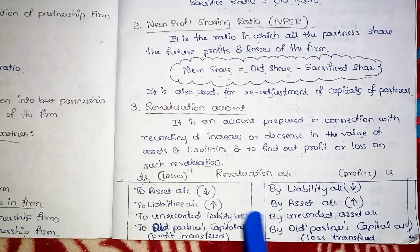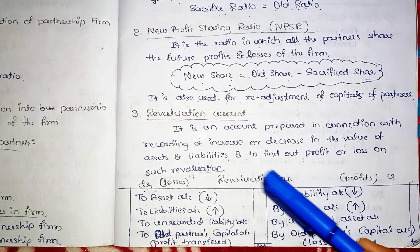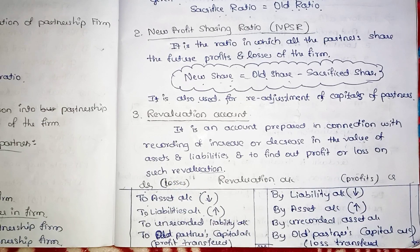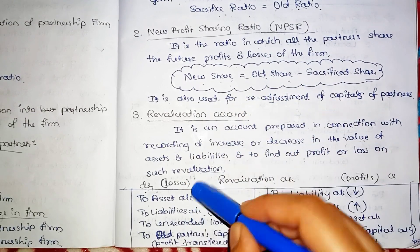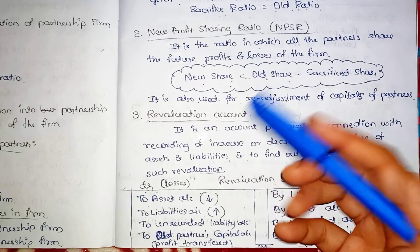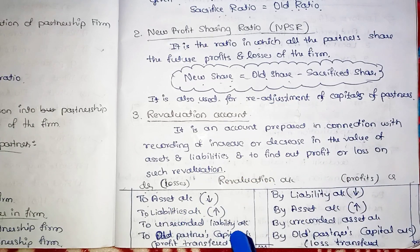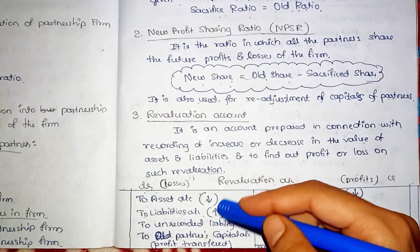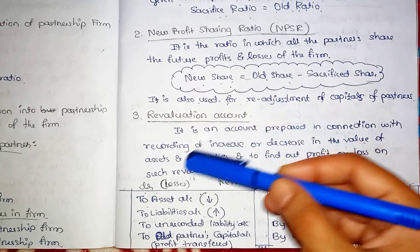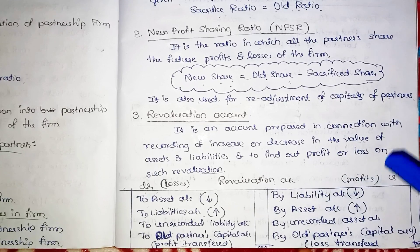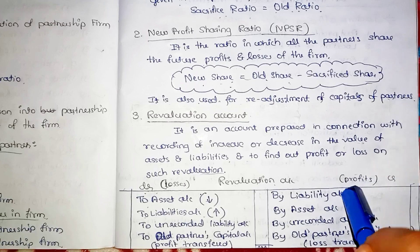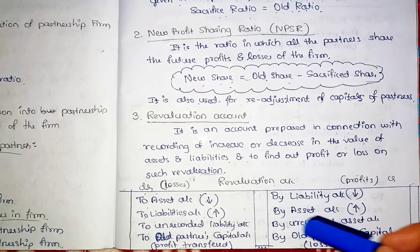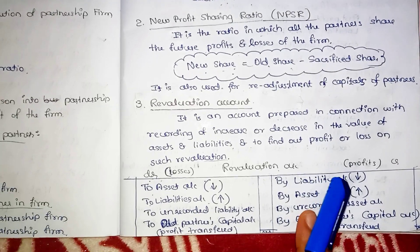Now I am going to explain the simple format of the Revaluation Account. The debit side records losses and the credit side records profits. When an asset value decreases, that is a loss. When a liability increases, that is also a loss recorded on the debit side. When a liability decreases or an asset value increases, that is a profit recorded on the credit side.